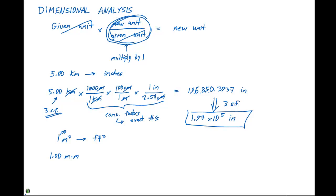We'll have to go from meters squared to centimeters squared, centimeters squared to inches squared, then inches squared to feet squared. Our given unit is 1.00 meters squared.